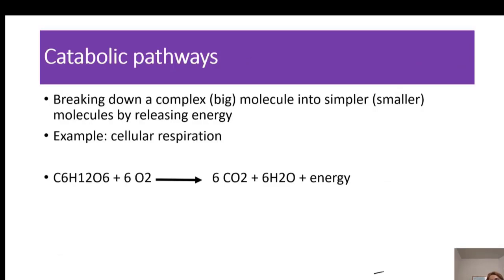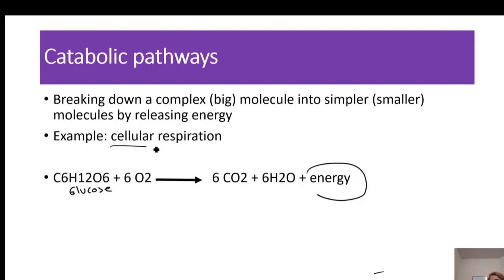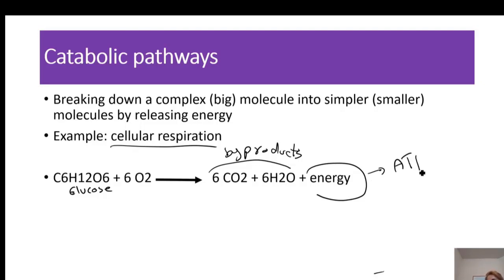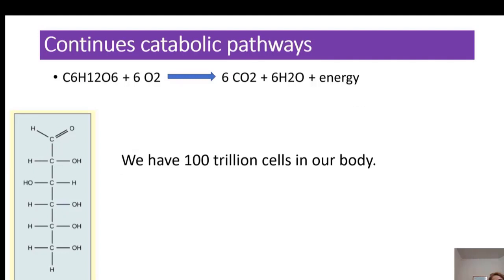The definition of catabolic pathways is breaking down complex molecules into simpler molecules by releasing energy. An example is cellular respiration: glucose from food and oxygen that we inhale are used, and the main purpose is to extract energy from food. Carbon dioxide and water are byproducts of this process. This energy is stored in an intermediate molecule called ATP.